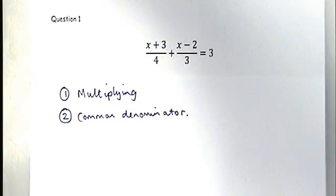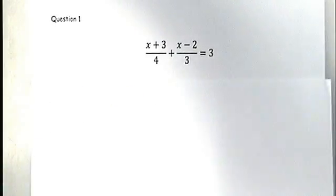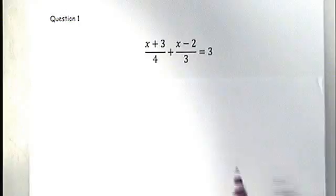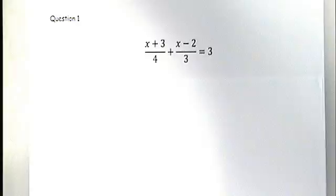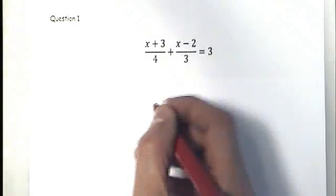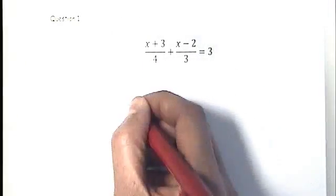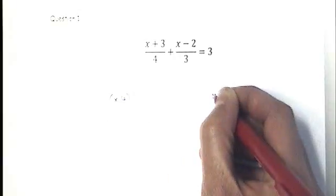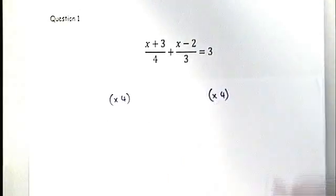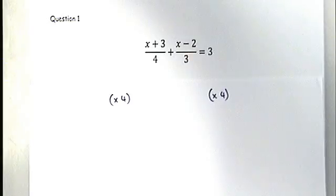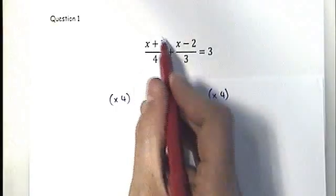Starting with the multiplying method: the thing causing difficulty are the denominators — this three and this four. We want to get rid of both of them. We'll start by multiplying both sides by four. When we say times by four for an equation, we mean times every term in the equation by four.